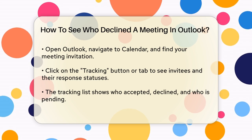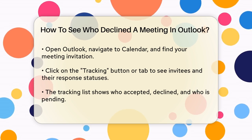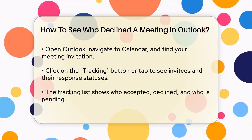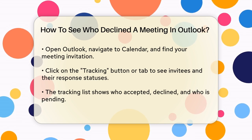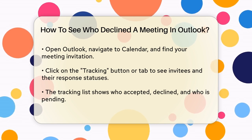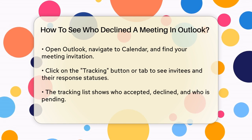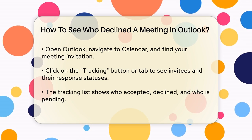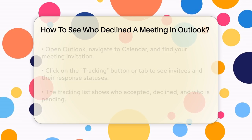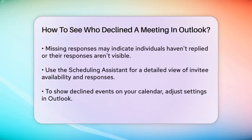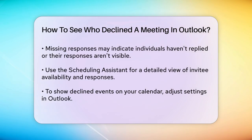If you're missing some responses, it might be because those individuals haven't responded yet, or their responses aren't showing up. In such cases, you can assume that anyone not listed under the accepted or tentative categories might have declined, but it's always best to verify. For a more detailed view, especially if you have a large number of invitees, you can use the scheduling assistant.